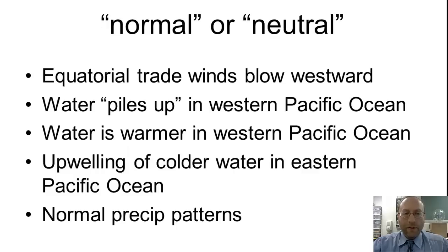In a normal and neutral year, equatorial trade winds blow westward. Water piles up in the western Pacific and is warmer there, with upwelling of colder water in the eastern Pacific Ocean, producing normal precipitation.